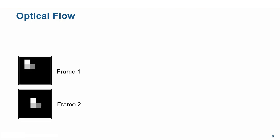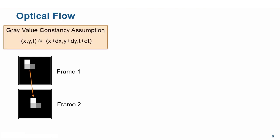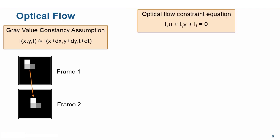One way to compute the motion vectors is to use the optical flow technique. Given a sequence of grayscale images, we assume that the intensity structures of an object are constant over time, at least between immediate frames. Here we have two frames where the object has moved in frame 2. This is called the gray value constancy assumption, and it results in the optical flow constraint equation. In this equation, Ix, Iy, and It are image gradients.